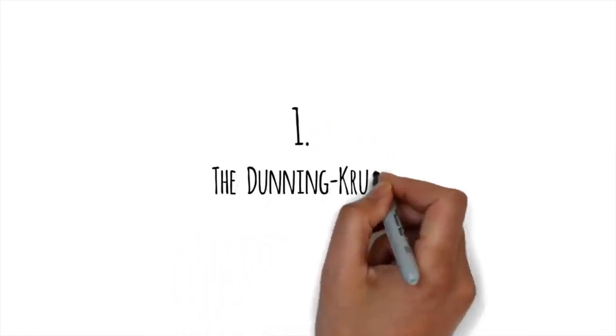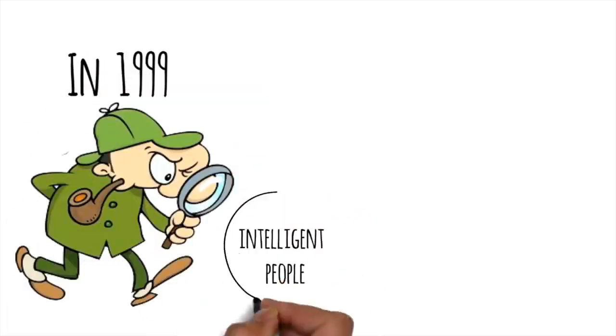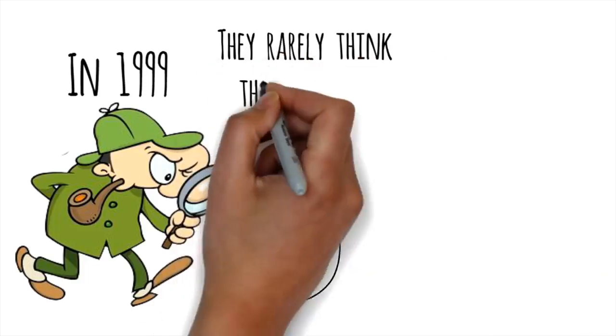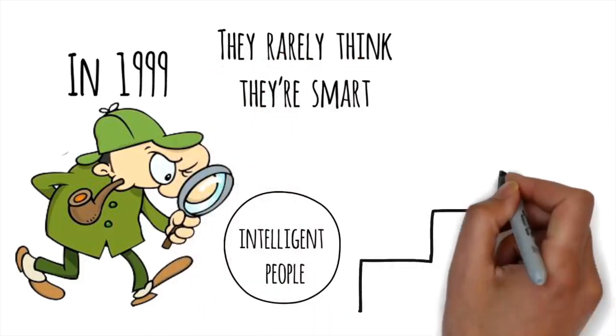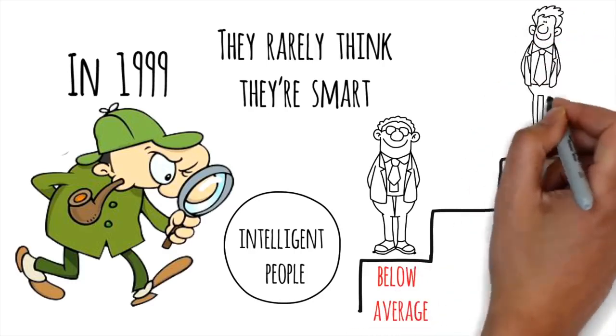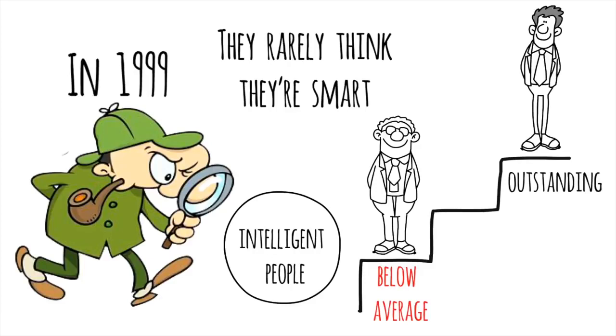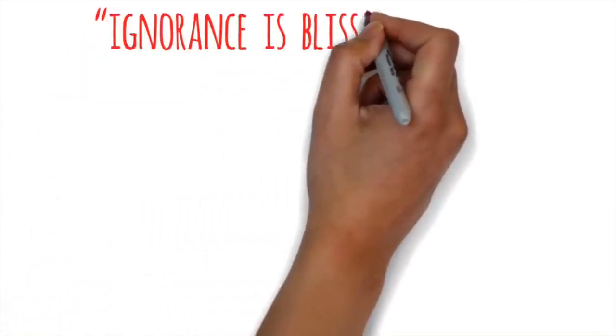Number 1. The Dunning-Kruger Effect. In 1999, two social psychologists discovered something about intelligent people. They rarely think they're smart. In fact, they often rank themselves way below average. On the other hand, people with low intelligence do the exact opposite. They almost always overestimate their rank by a long shot. The Dunning-Kruger Effect basically proves the old adage, ignorance is bliss.